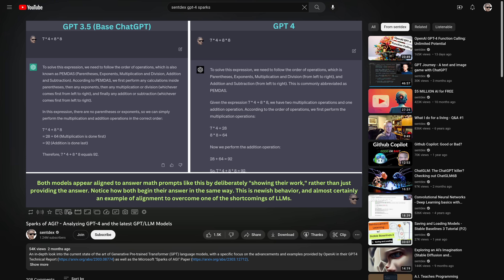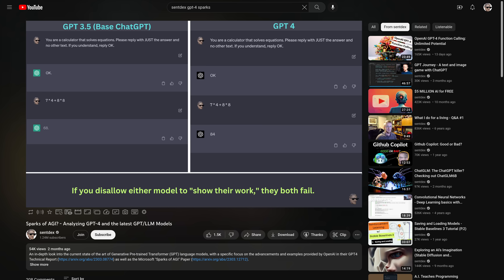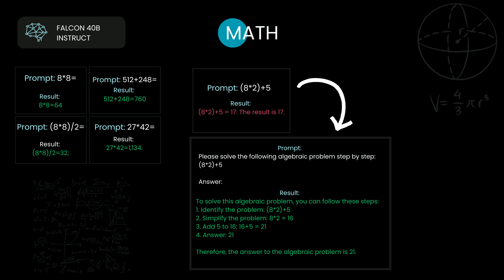Now GPT-3.5 responds in a very similar way to GPT-4, and I'm pretty confident they're probably running the same kind of pre-prompts or heuristics to get the model to think through the answers. You can still show that both models will fail if they try to generate just the answer and nothing more. But coming back to Falcon, if we ask Falcon without telling it to show its work, it does get the question wrong — but if we tell Falcon to show its work, it actually gets the question correct.